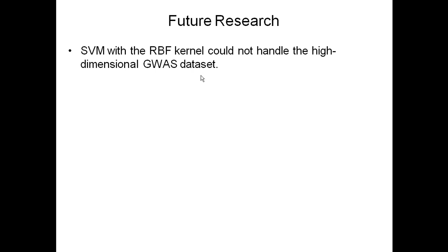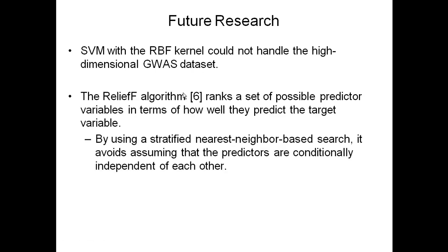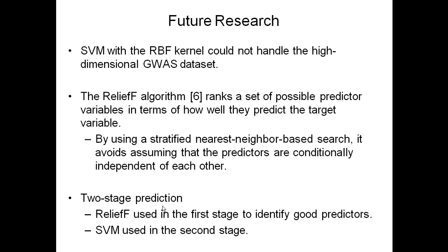For future research, SVM with the RBF kernel cannot handle high-dimensional GWAS datasets. There's an algorithm called RELIEFF which ranks possible predictor variables in terms of how well they predict the target variable, using an approach that avoids assuming the predictors are conditionally independent of each other. You can use RELIEFF to take 300,000 SNPs and find the 30 or 100 best predictors, then use SVM in the second stage to do prediction — a two-stage prediction approach. In this way, SVM gets a manageable number of variables and may achieve the best performance.